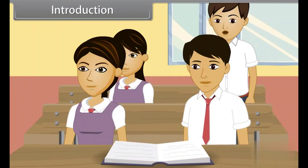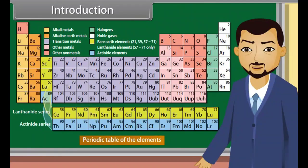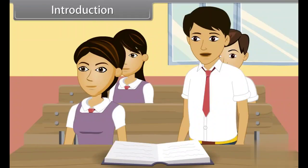What is the periodic table? The periodic table is the arrangement of elements in such a way that similar elements fall in a group, whereas dissimilar elements are separated. So we will classify the elements on the basis of their properties.